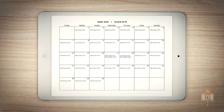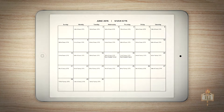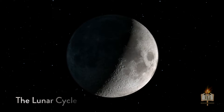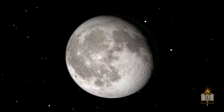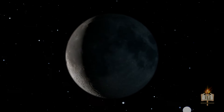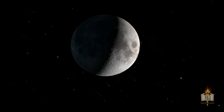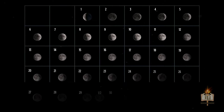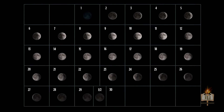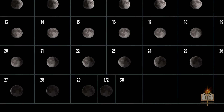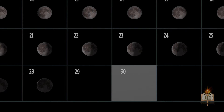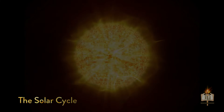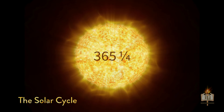Have you ever wondered how the Jewish calendar works and how it came about? The Jewish month begins with a thin crescent. The moon grows until it is full, wanes until it cannot be seen, and eventually reappears. This cycle takes approximately 29 and a half days. Since a month needs to consist of complete days, a month in the Jewish calendar is sometimes 29 days and sometimes 30 days.